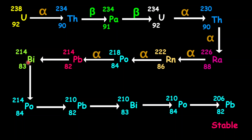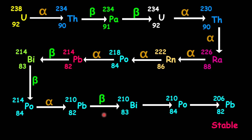Coming from lead-214 into bismuth-214, mass number remains the same — surely beta. From bismuth into polonium-214, mass number remains — beta. Coming from polonium-214 into lead-210, decrease by 4 in mass — surely alpha. Coming from lead-210 into bismuth-210, no change in mass — beta. From bismuth into polonium-210, no change in mass — beta. And for the final decay, from polonium into lead-206, there's a decrease in mass by 4 — surely alpha.